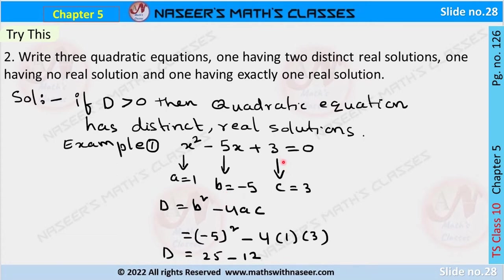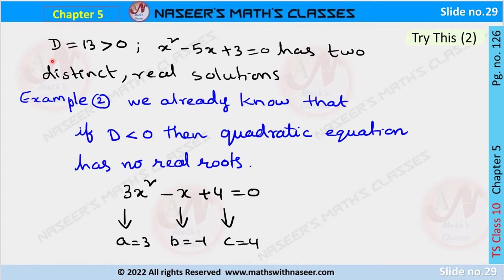And c is the constant, so c equals 3. The discriminant D equals b² minus 4ac. Substituting the values: (−5)² minus 4 times 1 times 3 equals 25 minus 12, so the discriminant value D equals 13, which is greater than 0. Therefore x² minus 5x plus 3 equals 0 has two distinct real solutions.